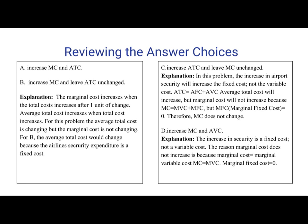For answers A and B: marginal cost increases when total cost increases after one unit of change, and average total cost increases when total cost increases. However, the airline's security expenditure is a fixed cost. Since it's a fixed cost, there's no change in MC. Therefore, A and B are incorrect.